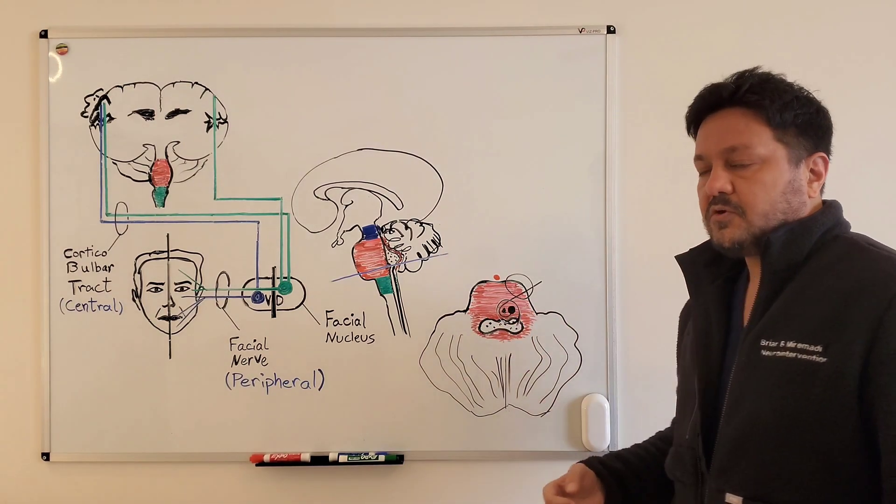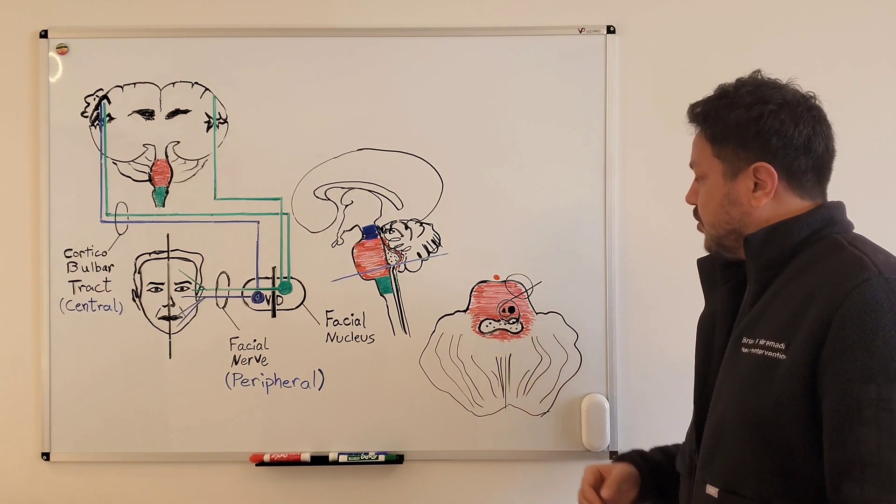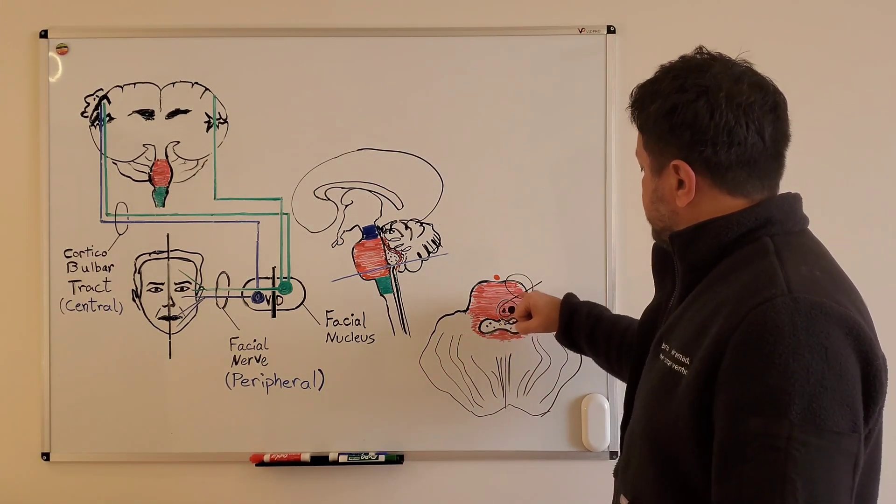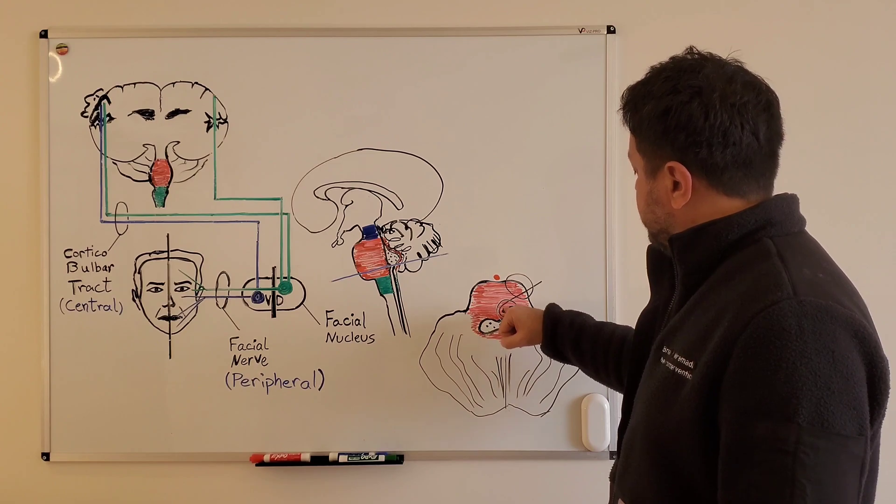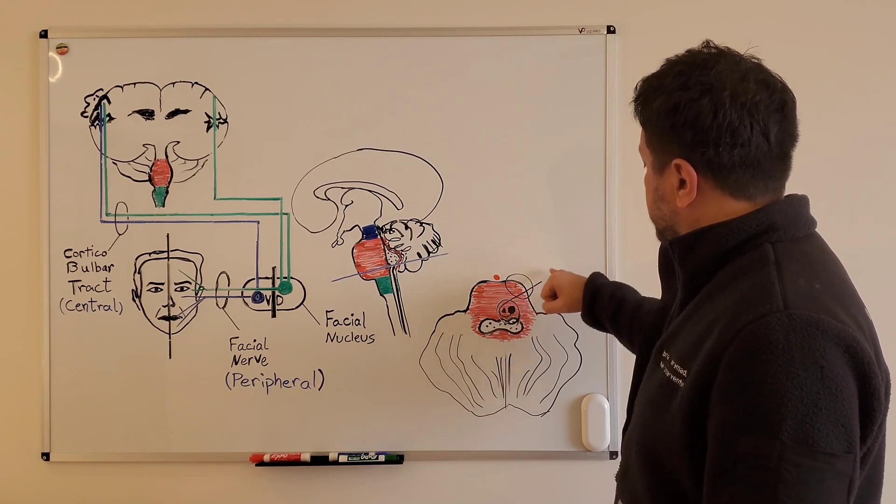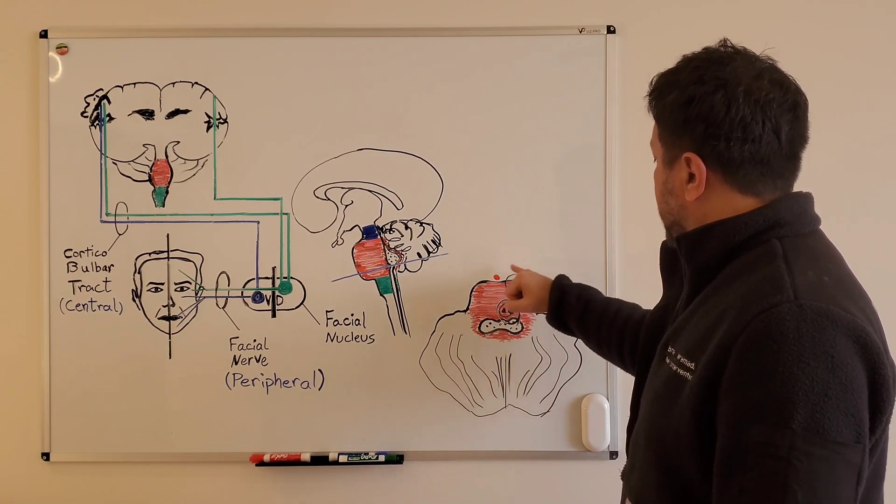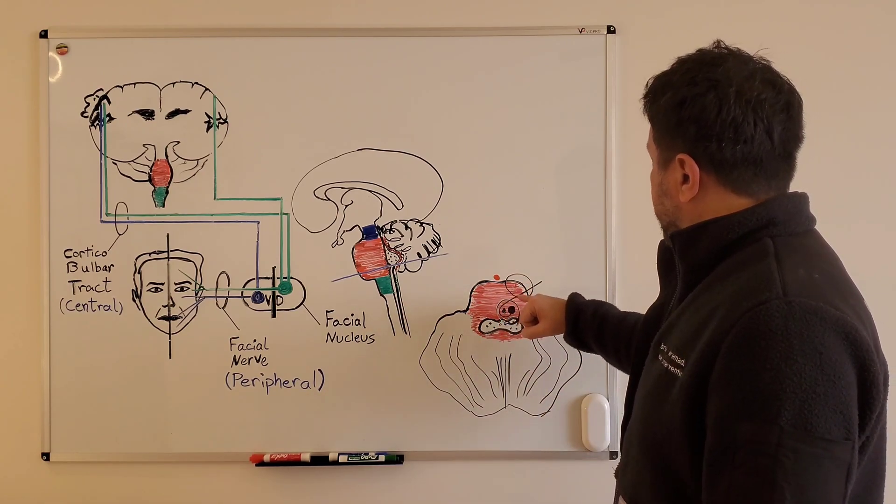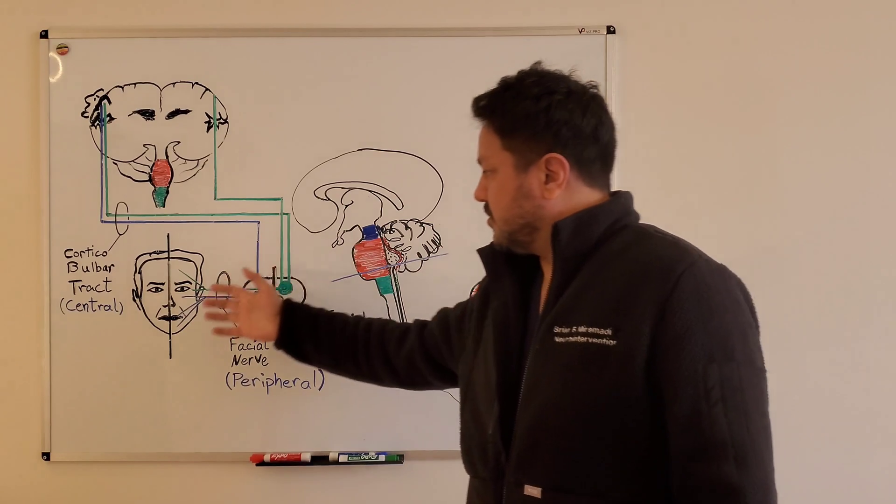The bumps are called the facial colliculi, an important landmark. The fibers will pass again behind the abducens nucleus and then exit into the pontine cistern, and then the fibers will go to the face.